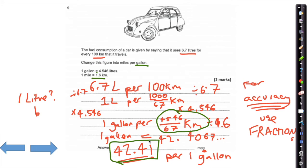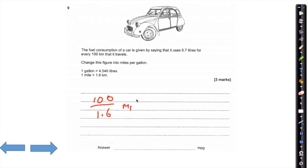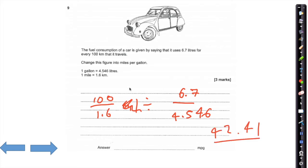Then divide that distance — as it's in kilometres — by 1.6 to convert to miles, giving 42.41 miles per gallon. To recap: divide 6.7 into both sides to get 1 litre, times by 4.546 to get gallons, then divide the distance by 1.6 to get miles. Your answer is 42.41 miles per gallon. You could also do it by ratio conversion and get the same answer.